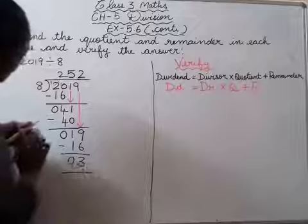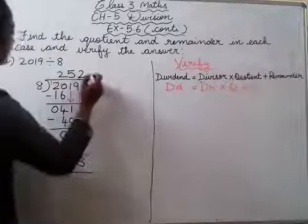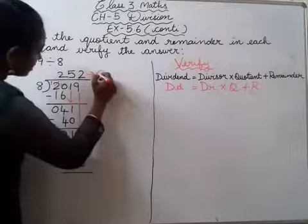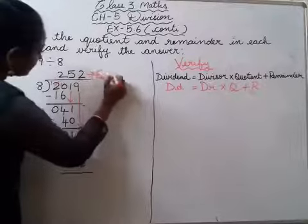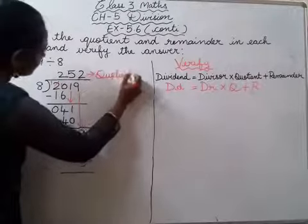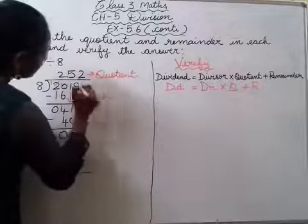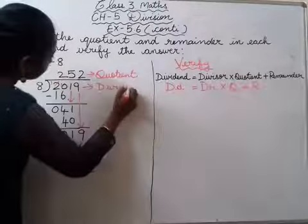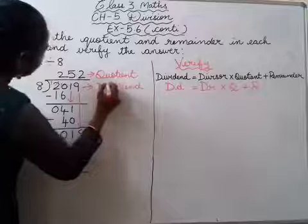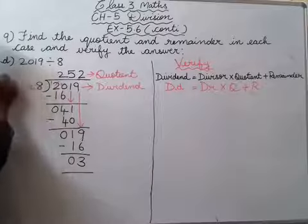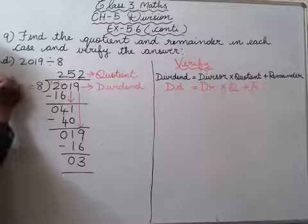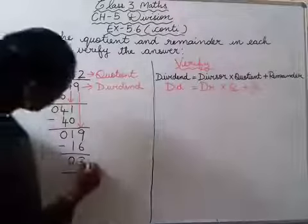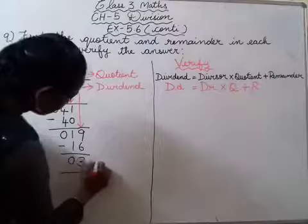This is the leftover. So, this is quotient. This is dividend. And this 8 is divisor. And this 3 is remainder.